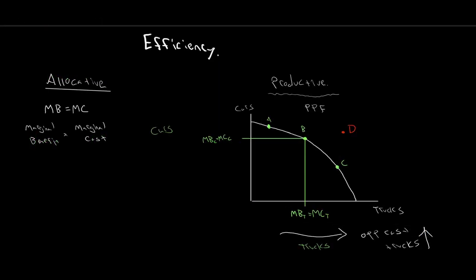We wrapped up looking at allocative and productive efficiency using our production possibilities frontier. As we increased truck production, we witnessed that the opportunity cost for trucks also increased — every extra truck required more and more cars to be given up. We can link this idea of marginal cost — the extra cost for an extra truck — with this increasing opportunity cost: the extra amount of cars given up for every extra truck produced.